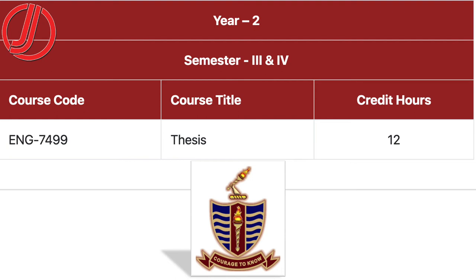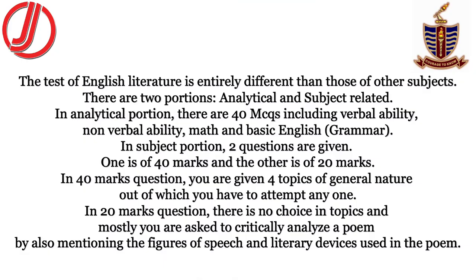You will have a 12-credit Thesis based on your chosen subject. Now let's go to the test. For English Literature, the test has two portions: analytical and subject-related. In the analytical portion, there are 40 MCQs including Verbal Ability — which covers basic English structure, Grammar, Comprehension — as well as Non-verbal Ability and Maths.